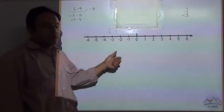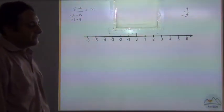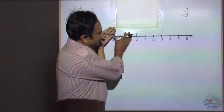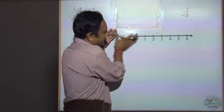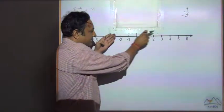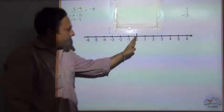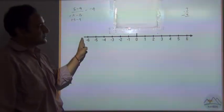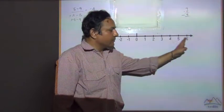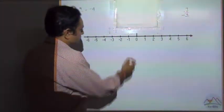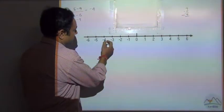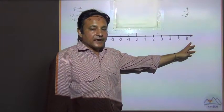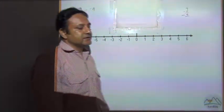Now to represent that on the number line. We saw the number line extends on the right hand side. The number line also extends on the left hand side with negative numbers going like minus 1, minus 2, minus 3, minus 4, and so on. Just like the positive numbers are on the right hand side after 0.